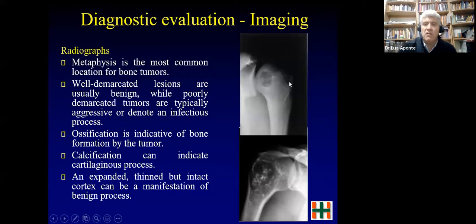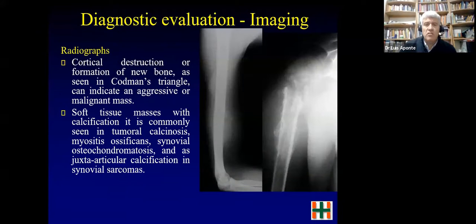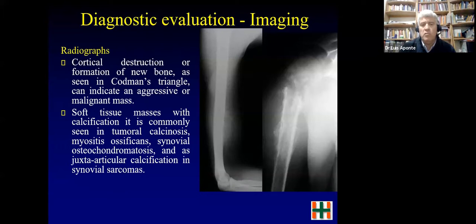This is a benign tumor and this is clearly a malignant tumor. On X-ray you can see cortical destruction. The Codman triangle is a periosteal reaction that occurs when the tumor grows too fast and the bone has no time to form sclerosis. If you see a soft tissue mass with calcification, you should think of synovial sarcoma, as calcification is very common in that tumor.